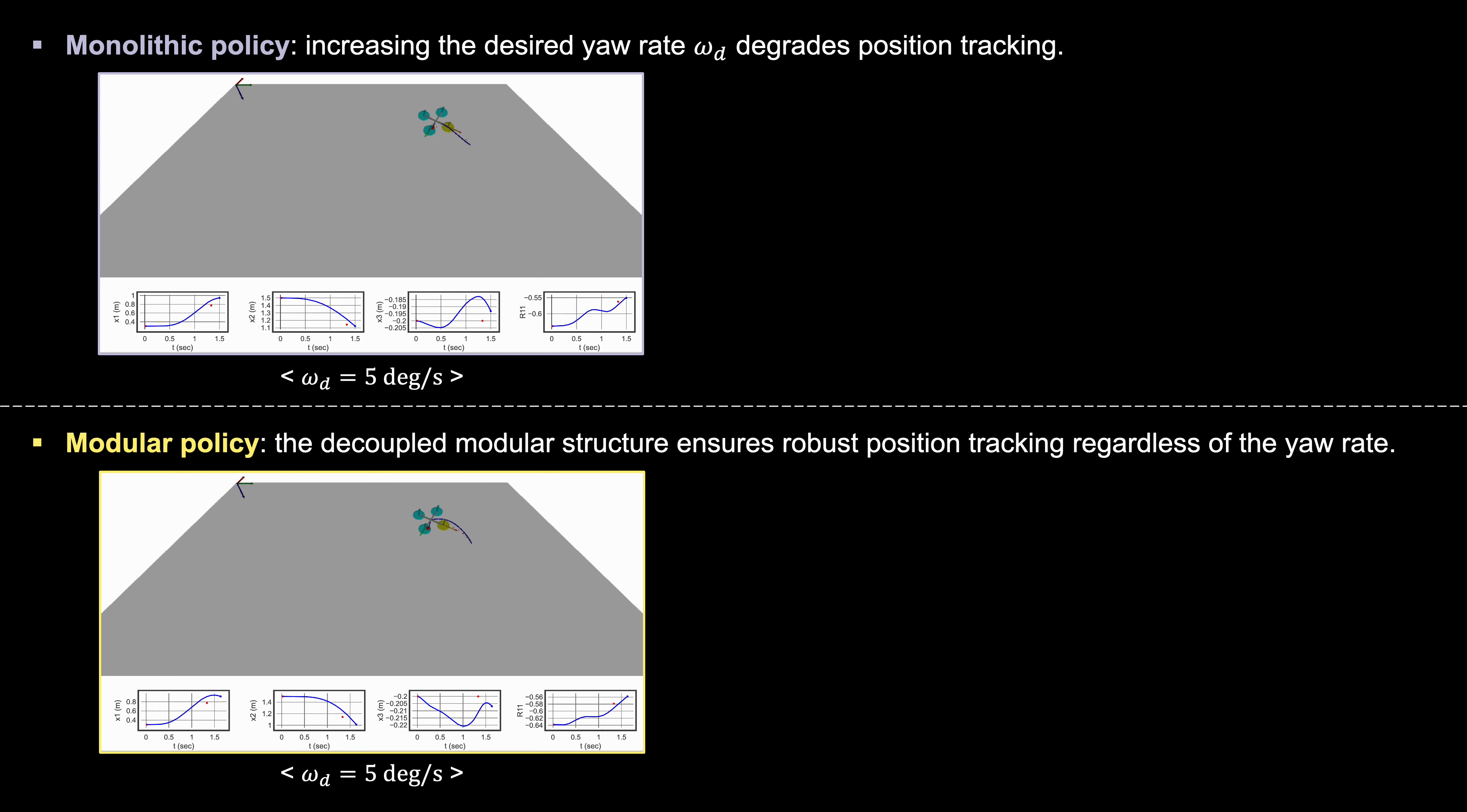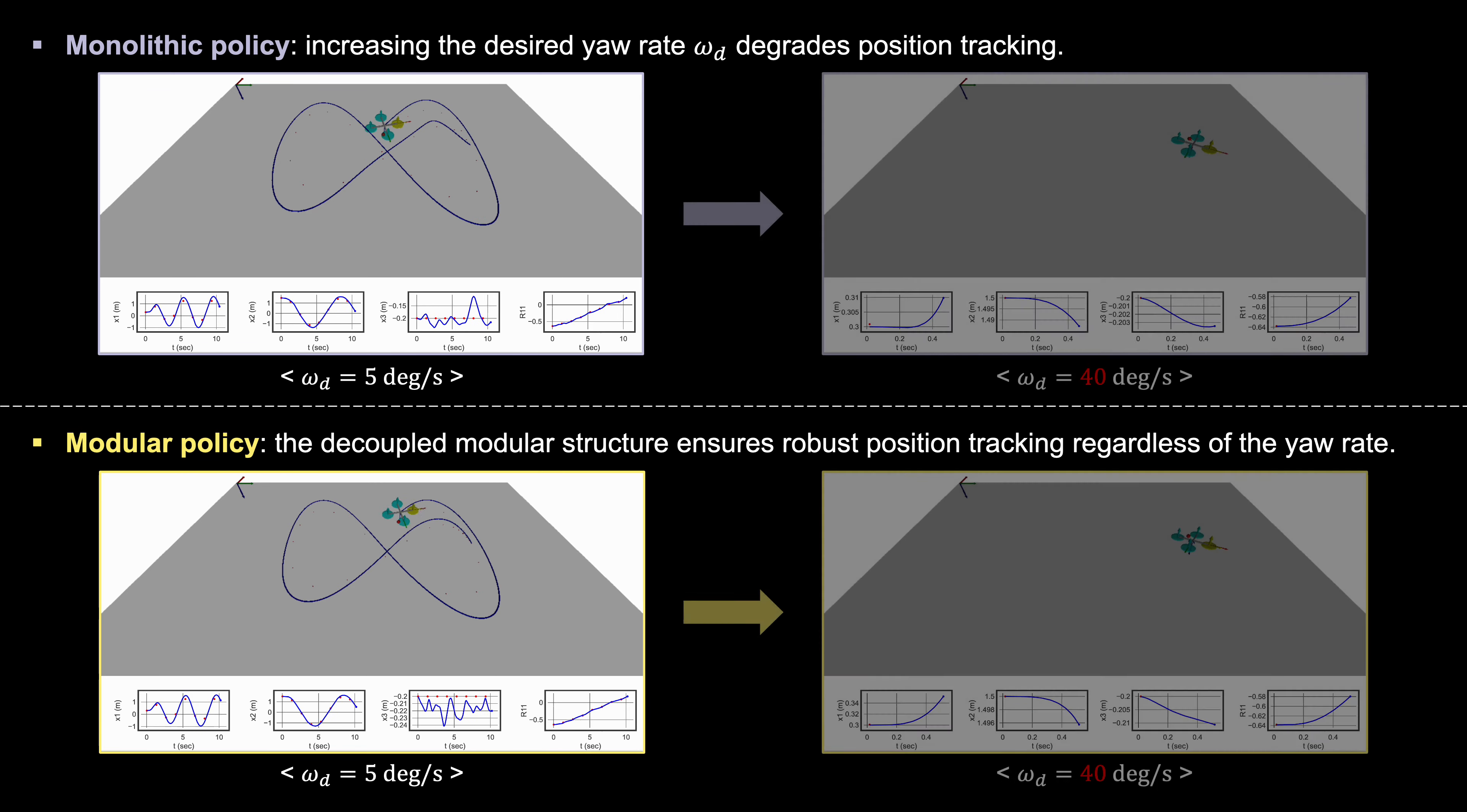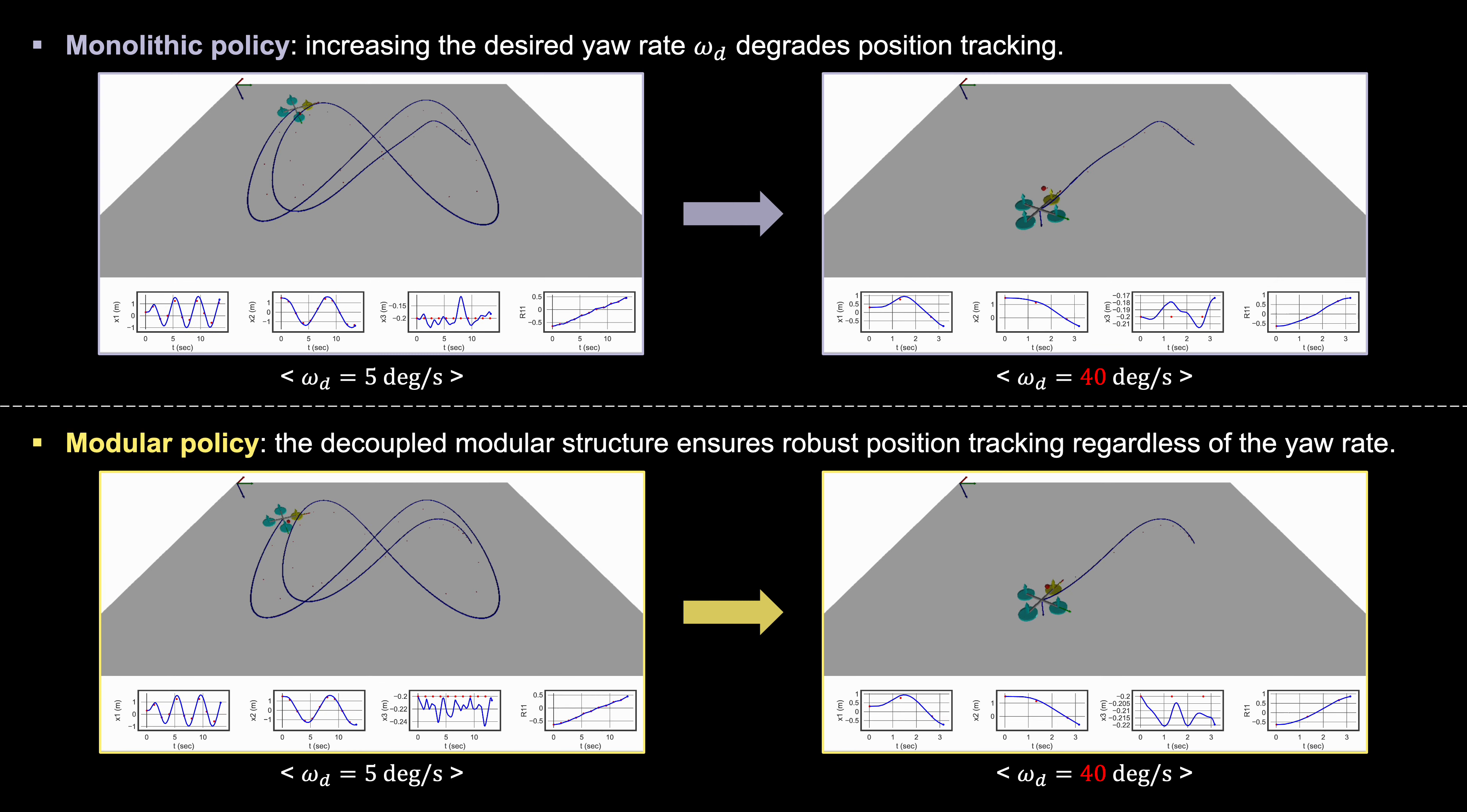For low desired yaw rates, such as 5 degrees per second, both methods demonstrate satisfactory position tracking and heading accuracy. However, as the desired yaw rate increases...